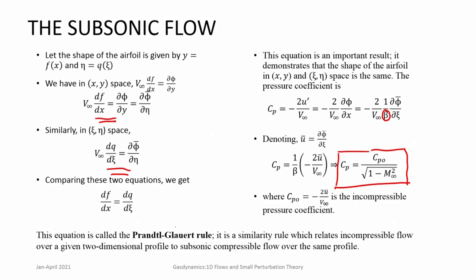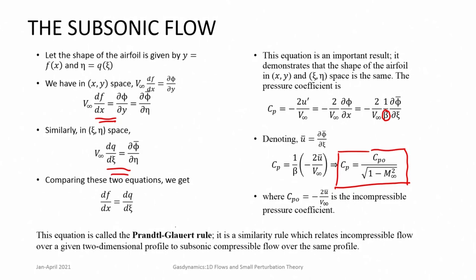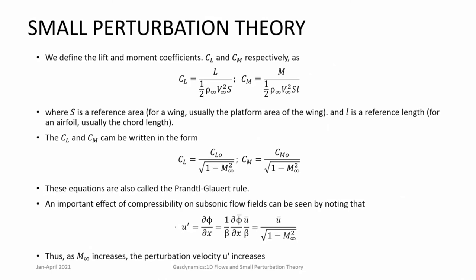There are limitations since this is a linearized problem and actual flow is not linearized, so people have looked at other approaches too. Using the Prandtl-Glauert rule for lift and moment coefficients, which are integrals of Cp, and since all other parameters are constants, we get: Cl = Cl₀ / √(1 - M∞²), and Cm = Cm₀ / √(1 - M∞²). As Mach number increases, the lift coefficient also increases due to the factor 1/√(1 - M∞²), showing that compressibility increases perturbation velocities.